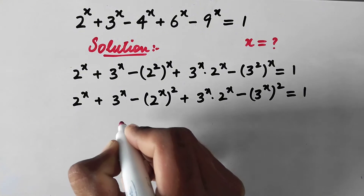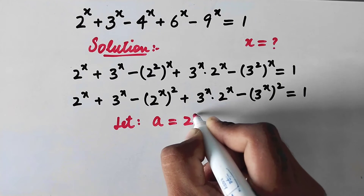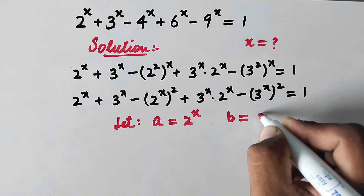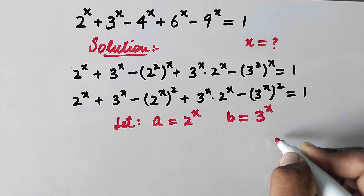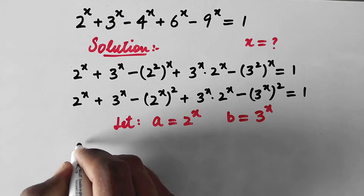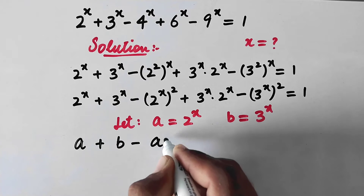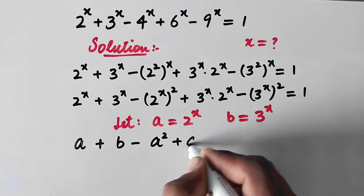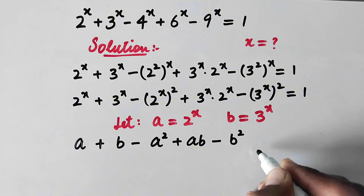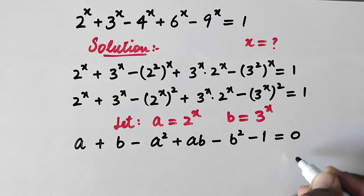Now we substitute: let a equal 2 to the power x and b equal 3 to the power x. Substituting these values, the equation becomes a plus b minus a squared plus ab minus b squared equals 1. Moving 1 to the left-hand side gives a plus b minus a squared plus ab minus b squared minus 1 equals 0.